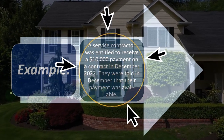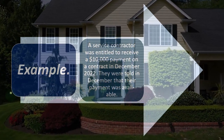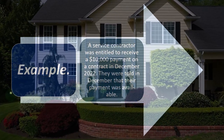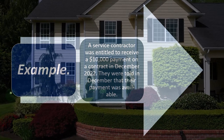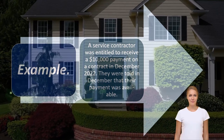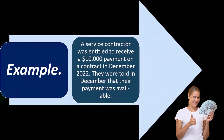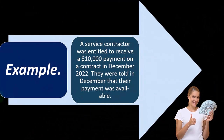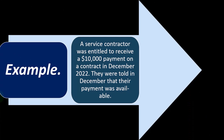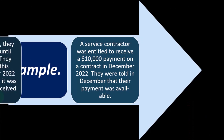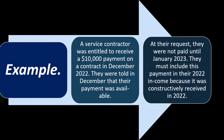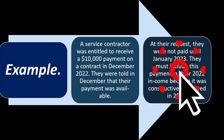Example: a service contractor was entitled to receive a $10,000 payment on a contract in December 2022. They were told in December that their payment was available. So at their request, they were not paid until January 2023.